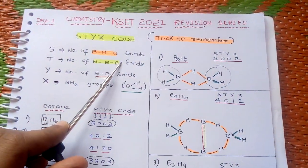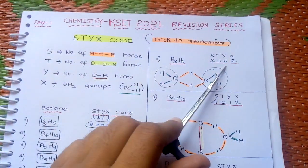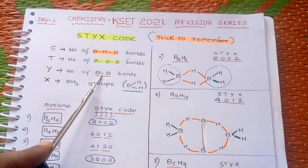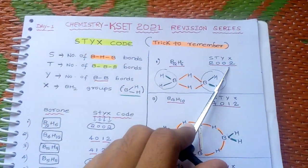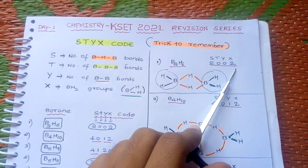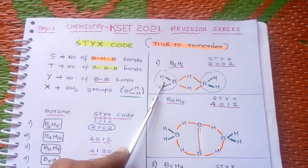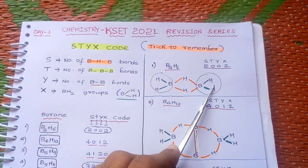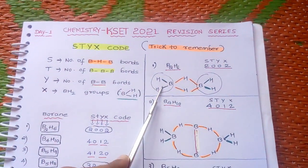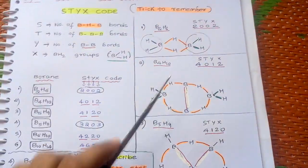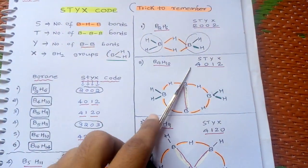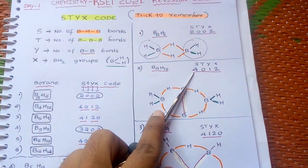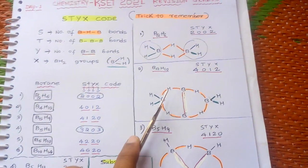For diborane B2H6, the STYX code is 2002. S means BHB bonds — there are two BHB bonds. T is zero — no BBB bonds. Y is zero — no BB bonds. X is two, meaning there are two terminal BH2 groups.